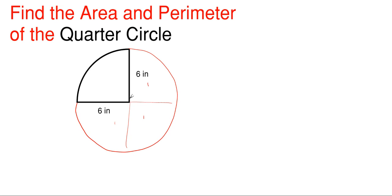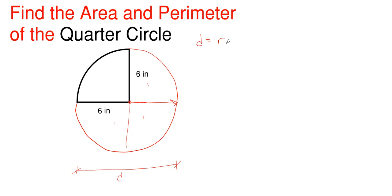Circles can be defined by either a diameter or a radius. The diameter is the distance all the way across the circle, and the radius is just from the center to the edge. So your diameter, represented by lowercase d, is equal to your radius (lowercase r) times two — diameter is just radius plus radius.